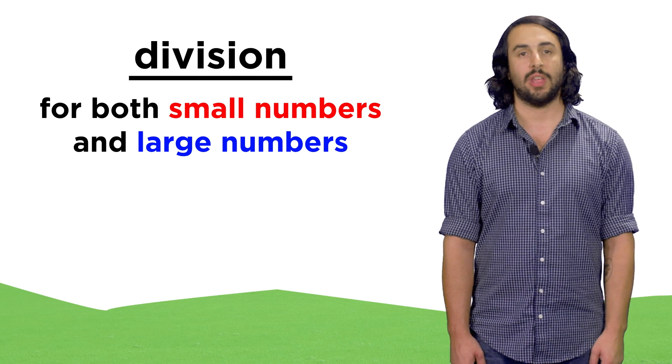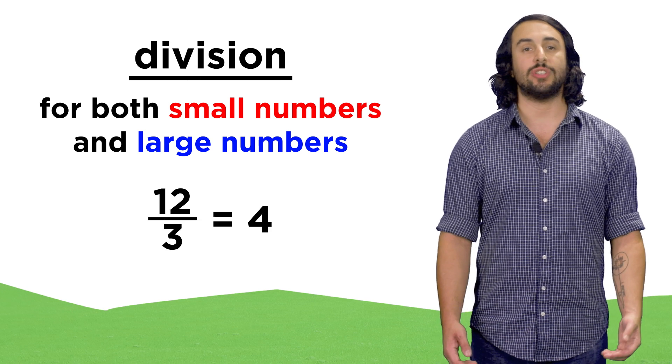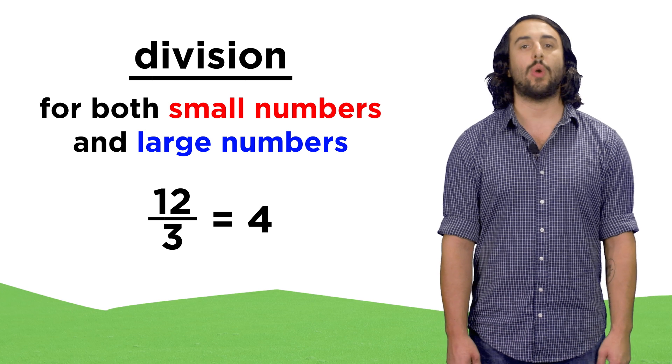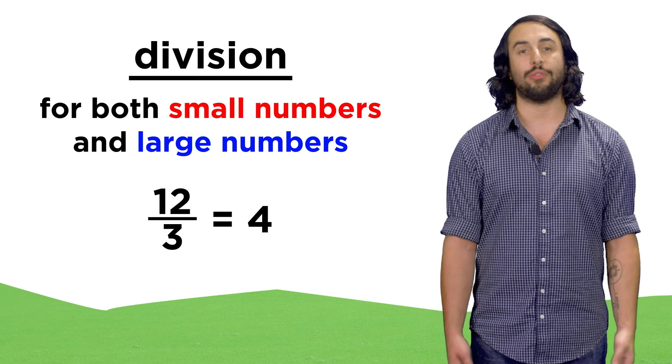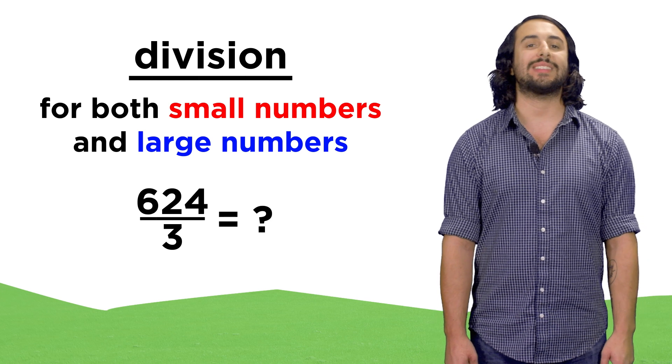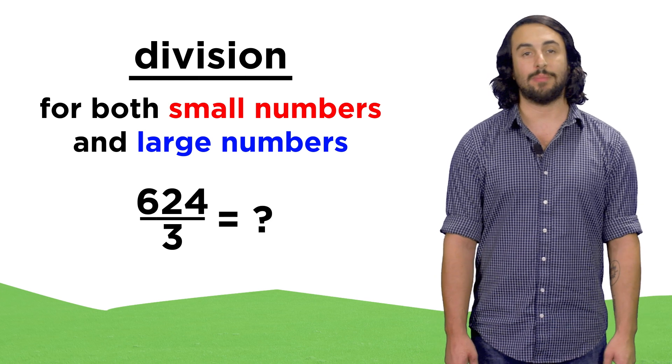The same goes for division. Sometimes it's easy to divide two numbers, twelve divided by three is clearly four, since four goes into twelve three times. But what about six hundred twenty-four divided by three?